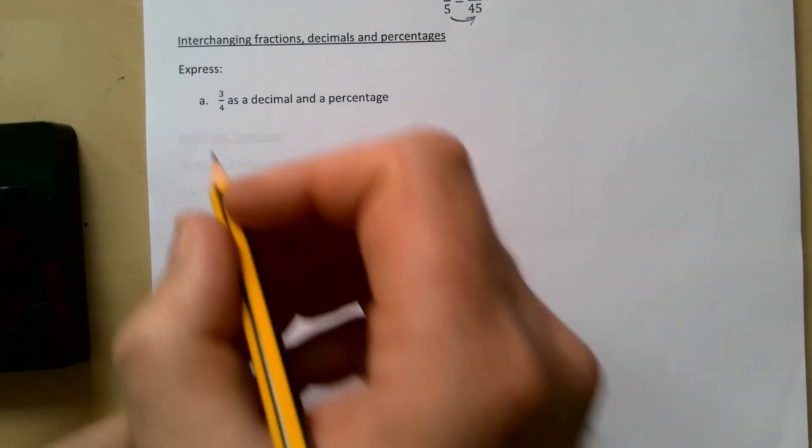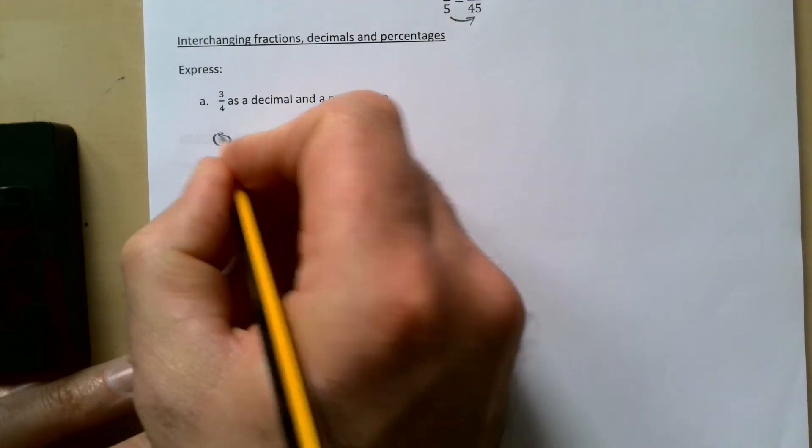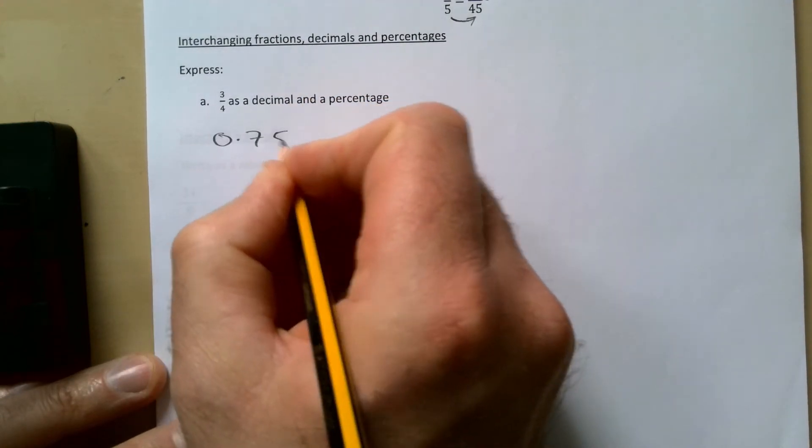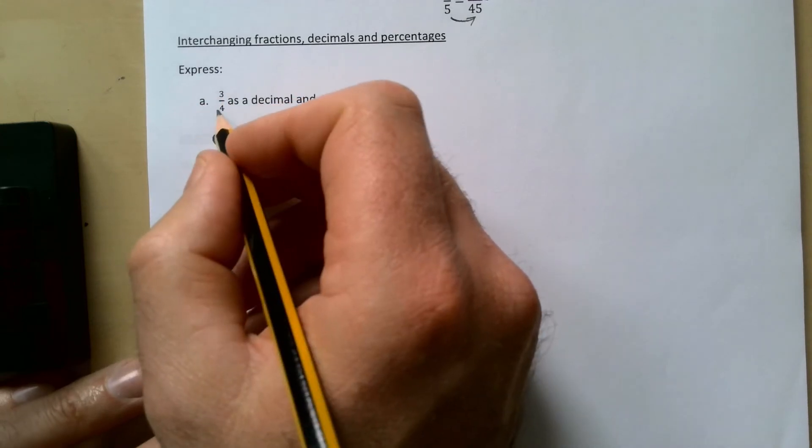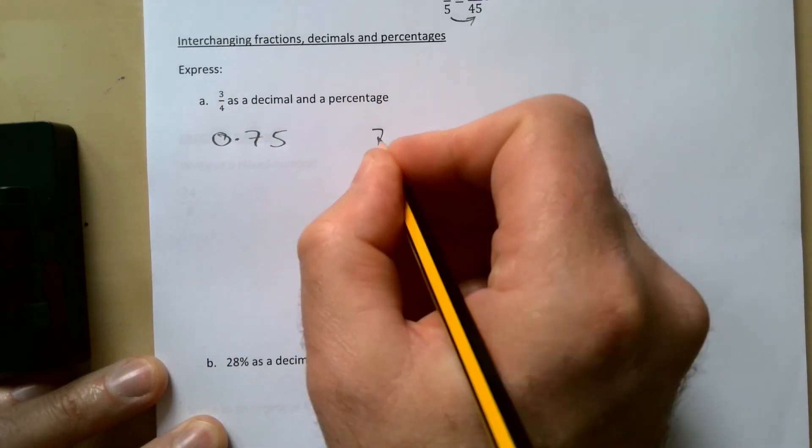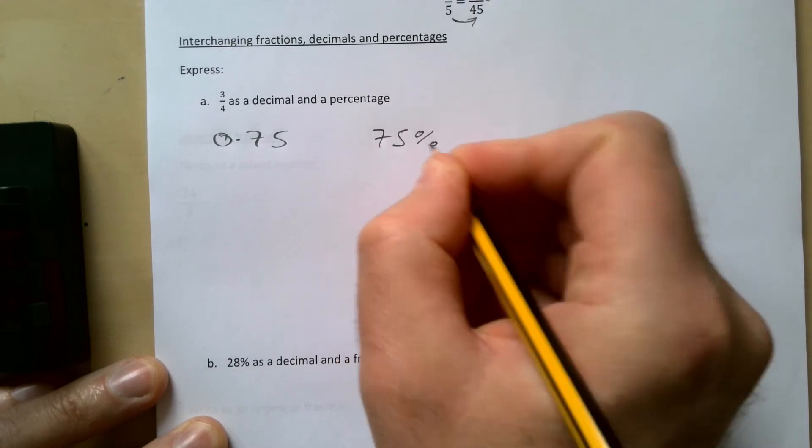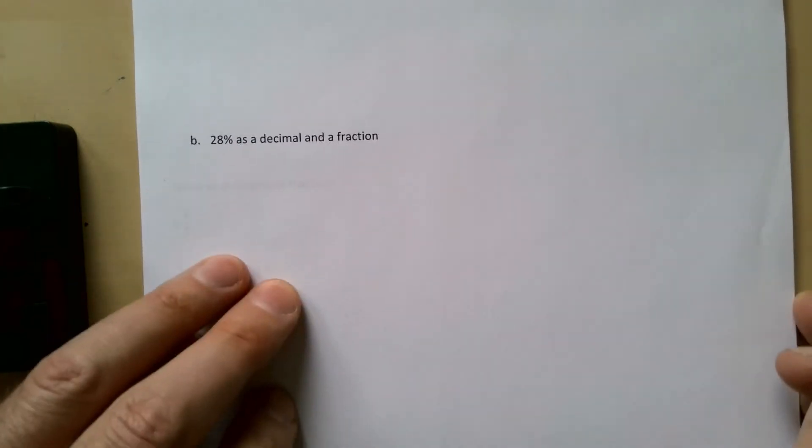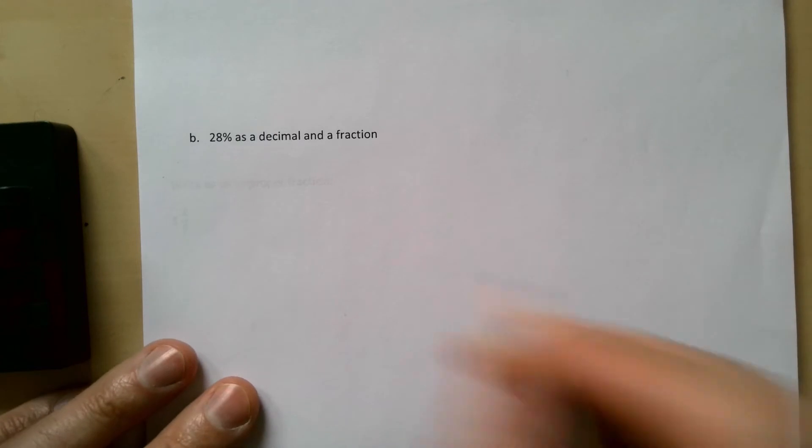As a decimal of course is going to be 0.75. We do have a way of working that out if you're not sure - you can do 3 divided by 4 of course, just as a short division. And then a percentage is going to be 75%.